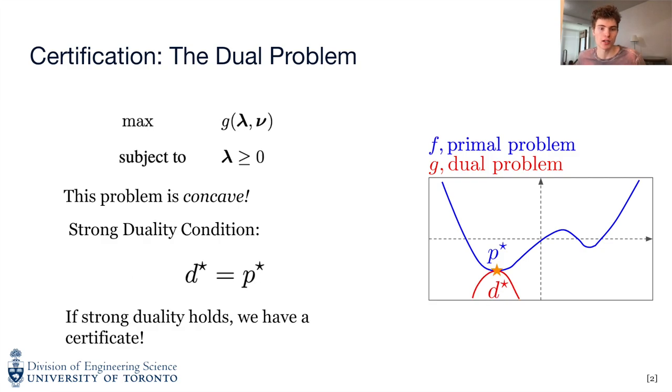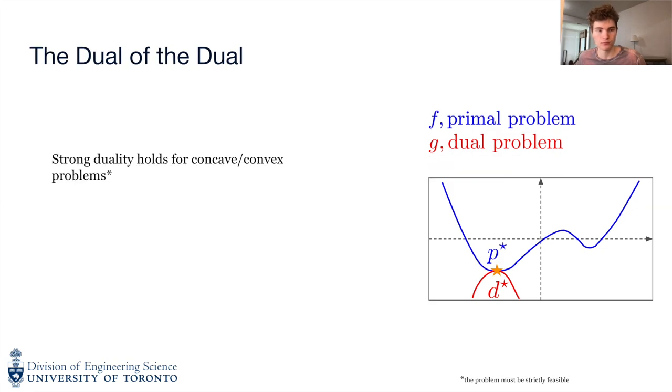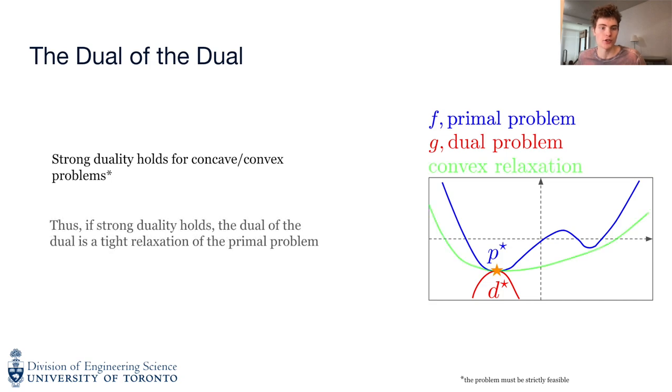In the case that D star equals P star, we say that strong duality holds. If strong duality holds, then to certify a candidate solution that's globally optimal, we can solve for the maximum of the dual problem, which is easy because it is concave, and check if a candidate solution cost is equal to D star. Note that under certain constraint qualifications, strong duality always holds for a concave slash convex problem. Thus, if strong duality holds for the primal problem, then the dual of the dual is a tight relaxation of the primal problem.